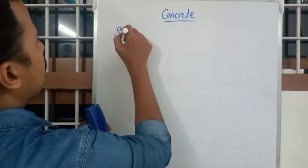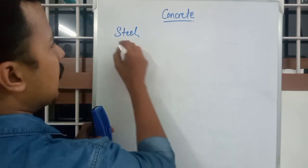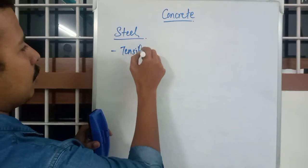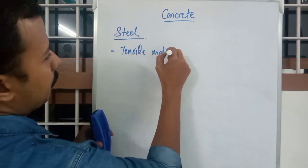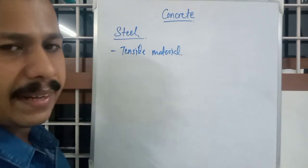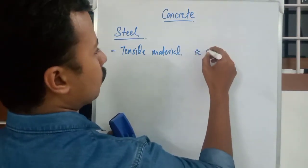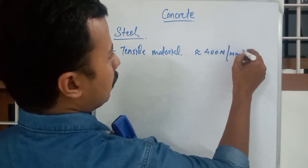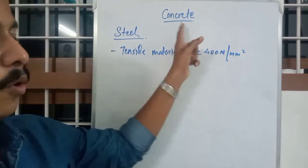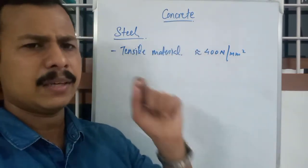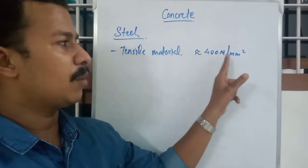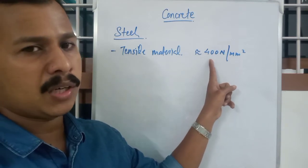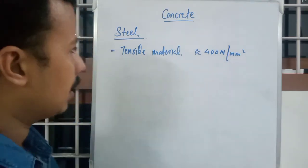Steel is a very tensile material. It can take on average up to, again, very approximately 400 Newton per mm square. Remember, the range for concrete compressive strength was around 50 or 20 Newton per mm square. But in case of steel for tension, it may be around 400 Newton per mm square, approximately.